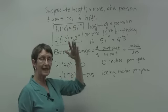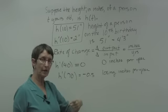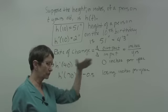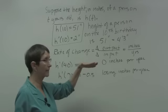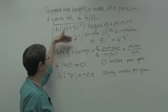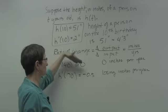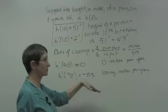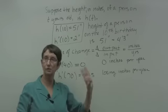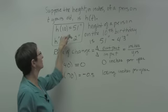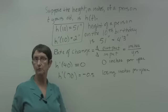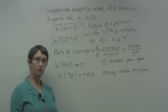A function doesn't have just one rate of change unless it's a straight horizontal line. Height goes up, stays the same, then shrinks — grow, stay the same, shrink. This is how you interpret a function like h, where h is the height in inches of a person t years old.